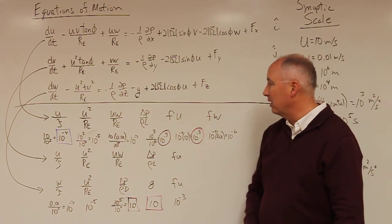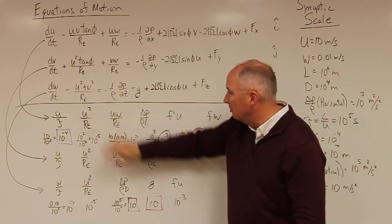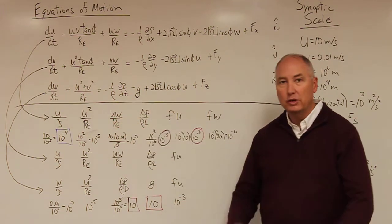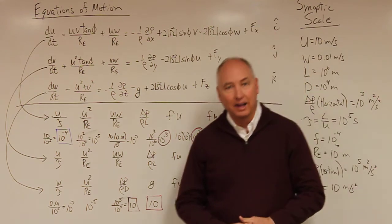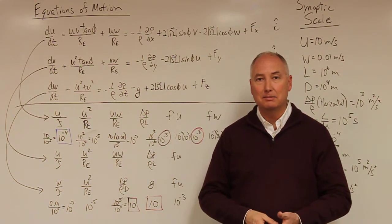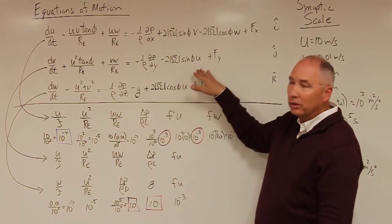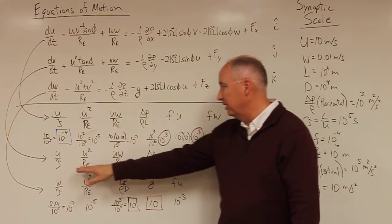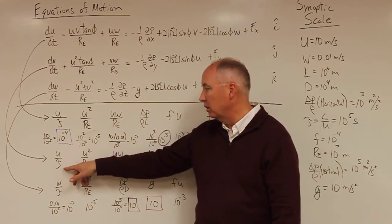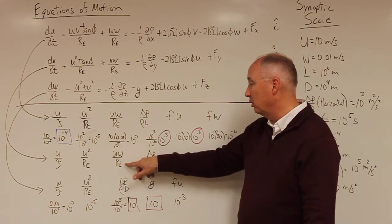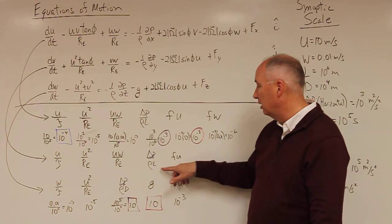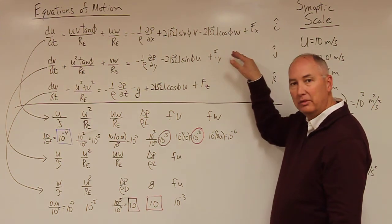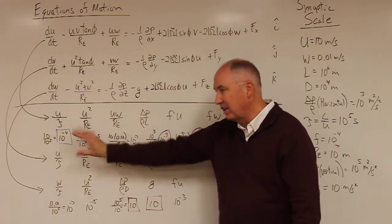We could continue to third, fourth, and fifth-order approximations, adding progressively smaller terms each time. The idea is to simplify the equations to capture most of the atmospheric behavior while simplifying the mathematics. Likewise, a scale analysis for the north-south horizontal equation of motion yields the exact same scaling factors: U/τ, U²/R_E, UW/R_E, ΔP/ρL, and fU. The only difference is that the exceptionally small term (10 to the minus 6th) present in the east-west equation is absent from the north-south equation; otherwise the scaling is identical.